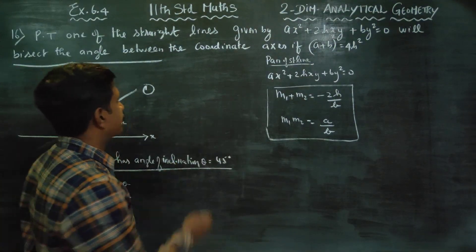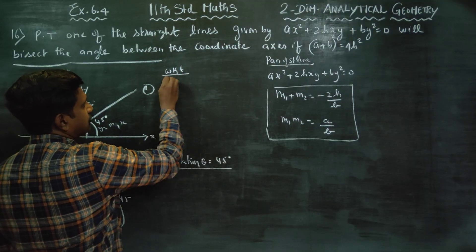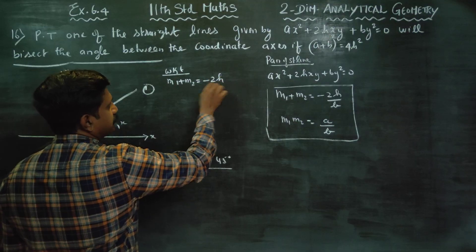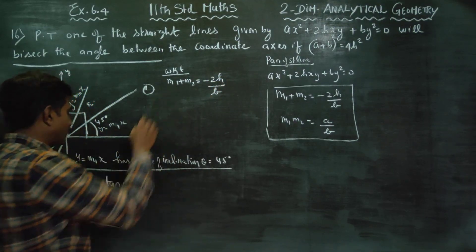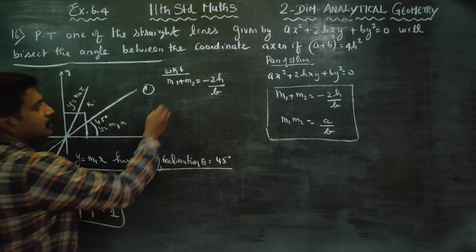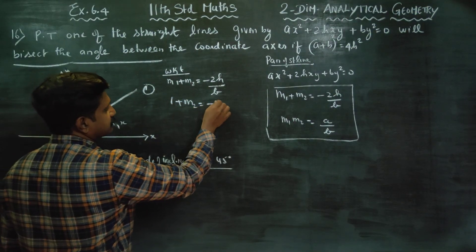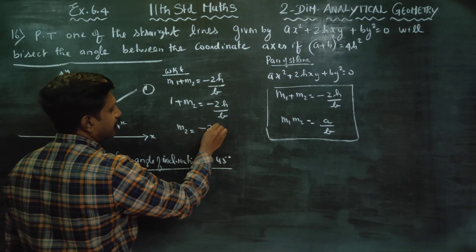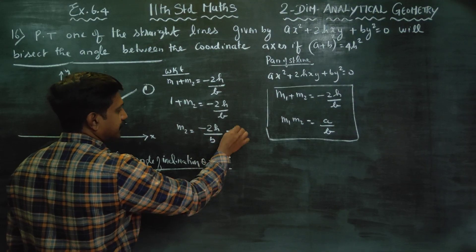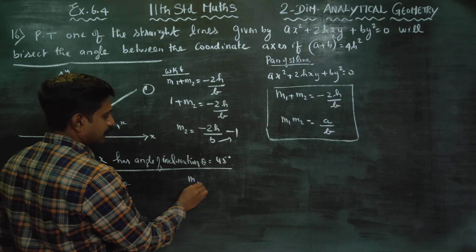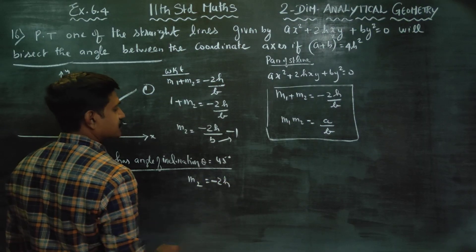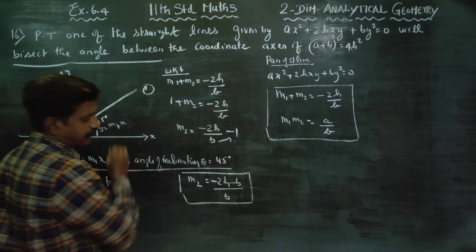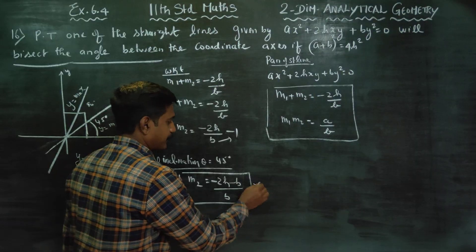We know that m1 + m2 = −2h/b. I have found the value of m1, which is equal to 1. So 1 + m2 = −2h/b, therefore m2 = −2h/b − 1. Cross multiplying, m2 = (−2h − b)/b. This is result number 1.